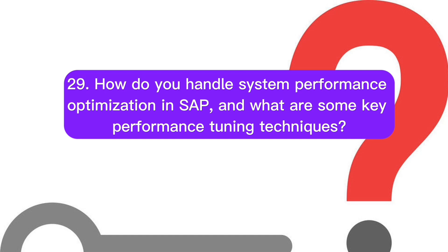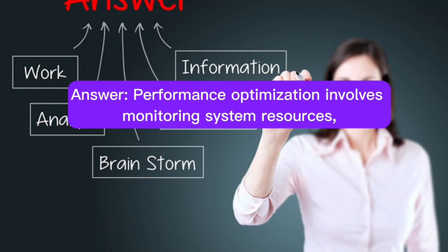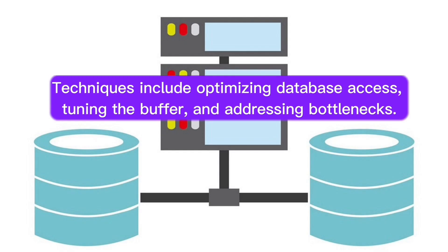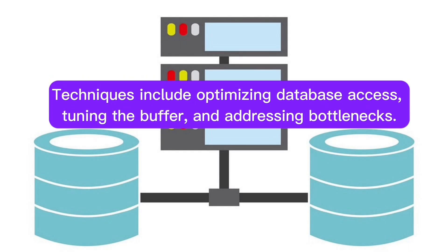Question 29: How do you handle system performance optimization in SAP, and what are some key performance tuning techniques? Performance optimization involves monitoring system resources, analyzing performance data, and adjusting parameters as needed. Techniques include optimizing database access, tuning the buffer, and addressing bottlenecks.